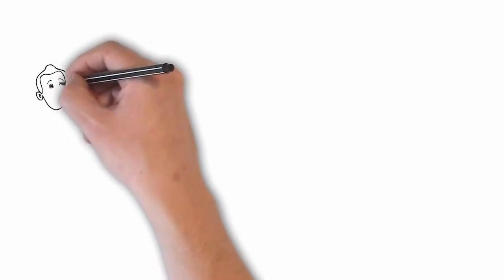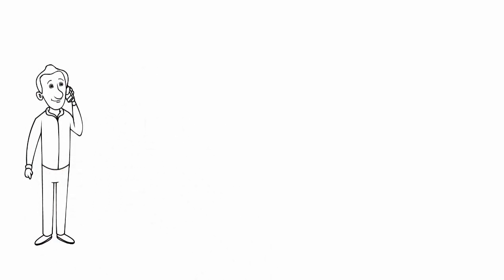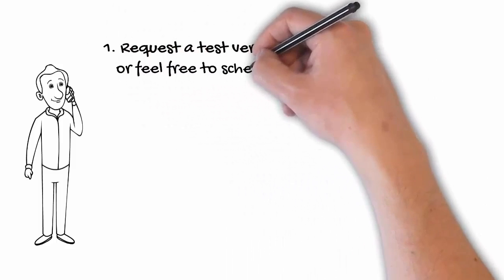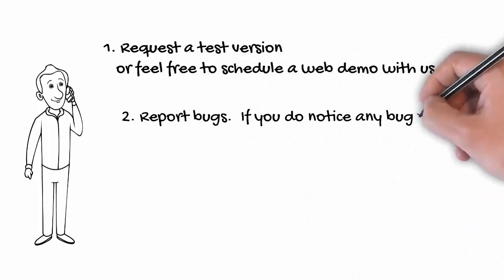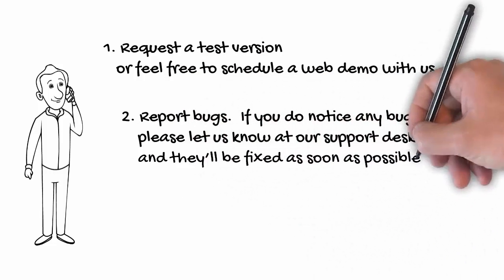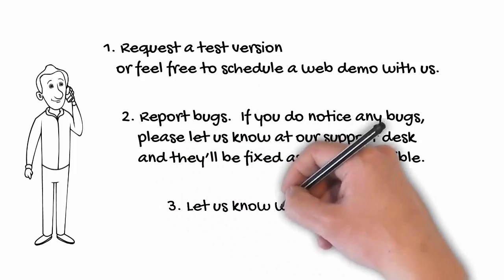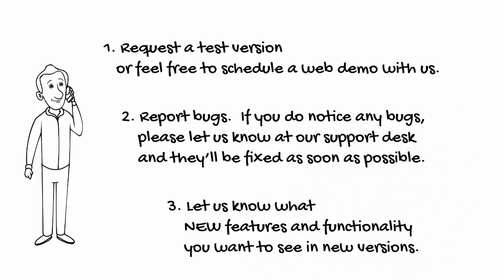Your feedback is extremely important to the future success of LemonTree. With that said, there are three important things that will help us continually improve LemonTree for you. First, request a test version or feel free to schedule a web demo with us. Second, report bugs. If you do notice any bugs, please let us know at our support desk and they'll be fixed as soon as possible.